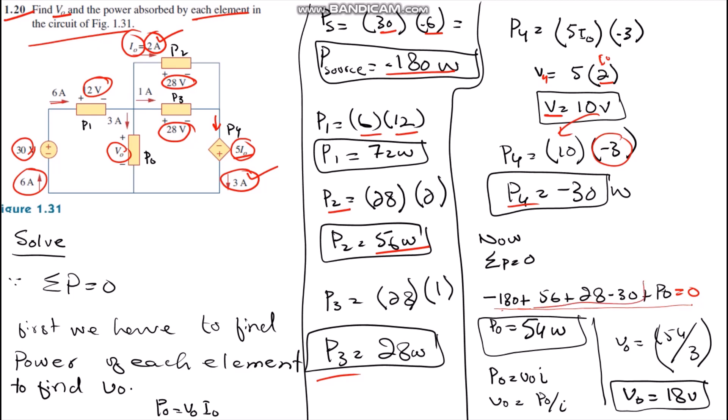P naught is the power of the element V naught. We know that P equals V times I, so from this we get V naught equals P naught over I, which is 54 over 3, then V naught equals 18 volts.